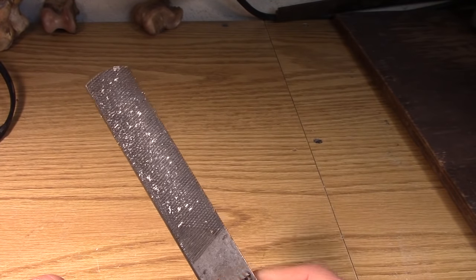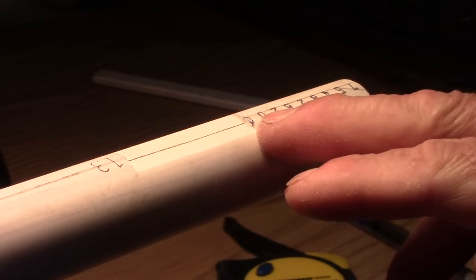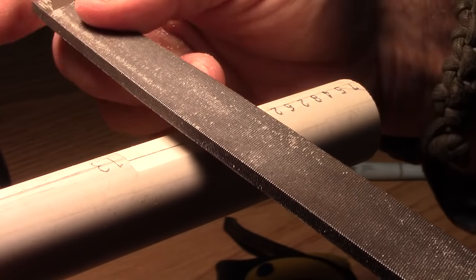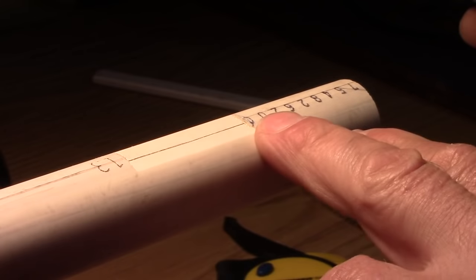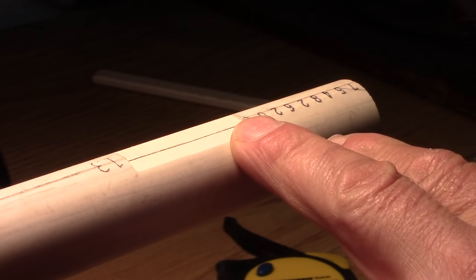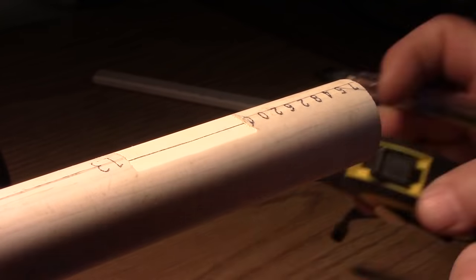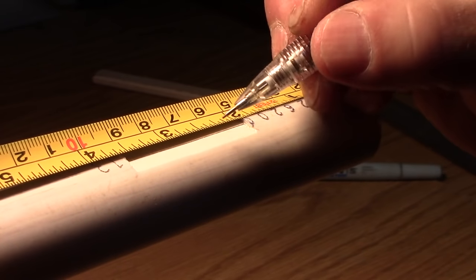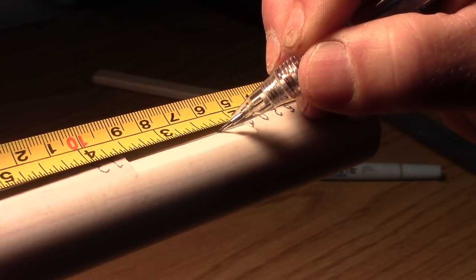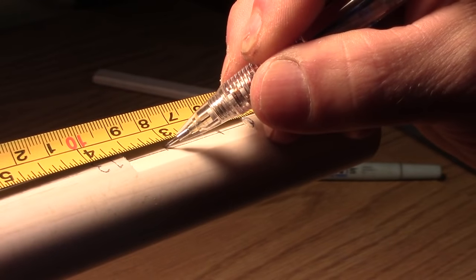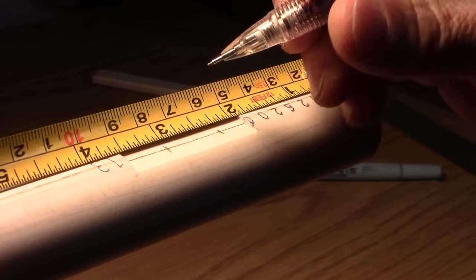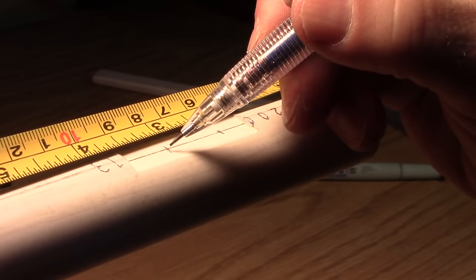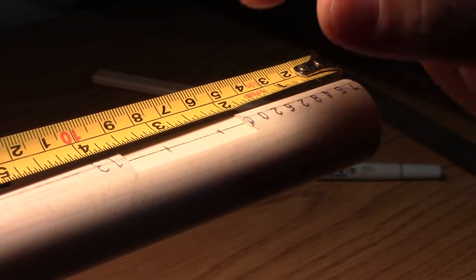The area that we flattened out with the forstner bit, I went ahead and took a metal file and filed out just about all of the lines, filed it smooth. Now we're going to mark it at two and a quarter and three inches. This is where we're going to drill our hole for the air to come up out of the mouthpiece, and this one will be where we drill the hole for the air to go in and make the sound.